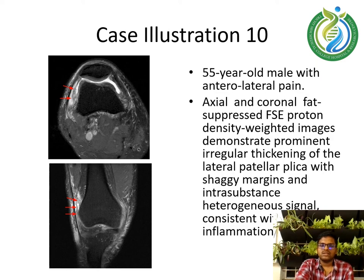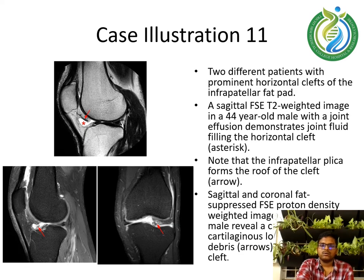Case illustration 10: a 55-year-old male with anterolateral pain. Axial and coronal fat-suppressed FSE proton density weighted images demonstrate prominent irregular thickening of the lateral patellar plicae with shaggy margins and intra-substance heterogeneous signal, consistent with inflammation of the plicae.